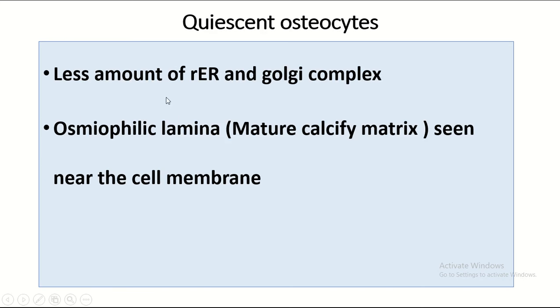Histological features of the quiescent osteocyte: they contain a less amount of rough endoplasmic reticulum and Golgi complex, and an osmophilic lamina is seen near the cell membrane.